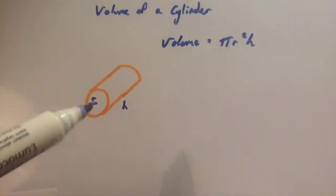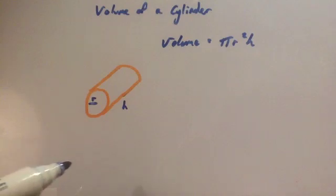The volume of any prism is the area of the cross section, so the area of the front of the cross section, times by how long it is.